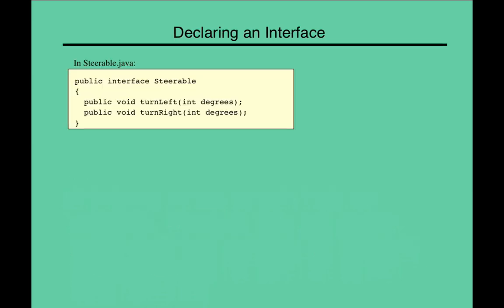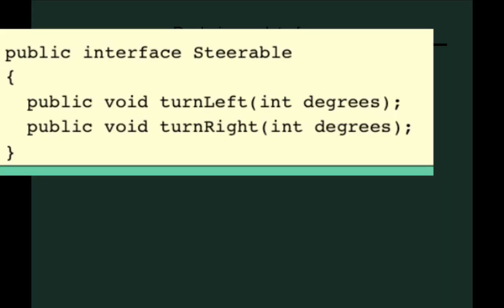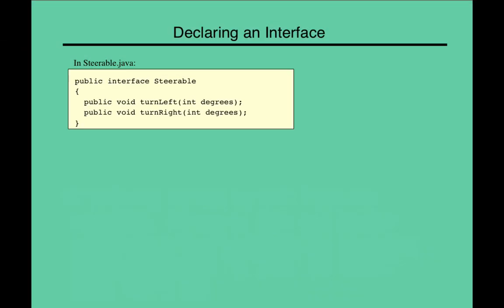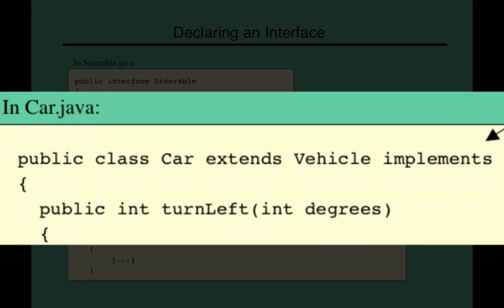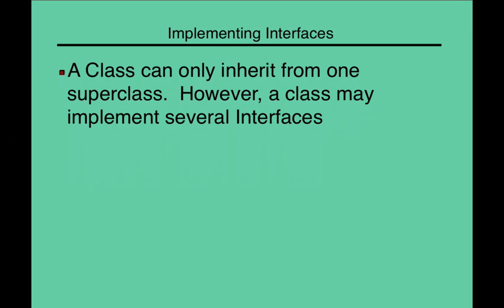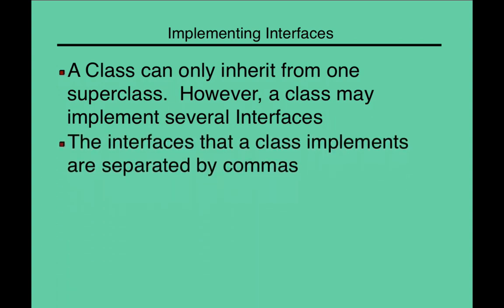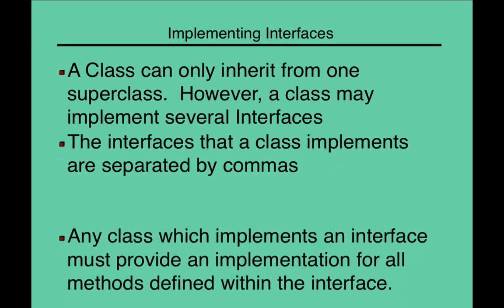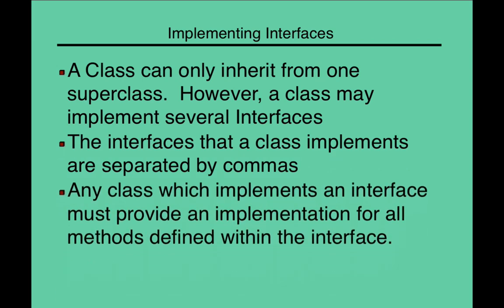For instance, here's an interface called steerable. Let's say we're making a video game. And if you wanted to make an interface called steerable, this means that this object can be turned left and it can be turned right. So, a car would be a steerable object. So, you can extend these implementations by separating them in commas. And we'll see an example in the next slide. So, if you are going to implement an interface, you must implement all of the methods that were defined in the interface.